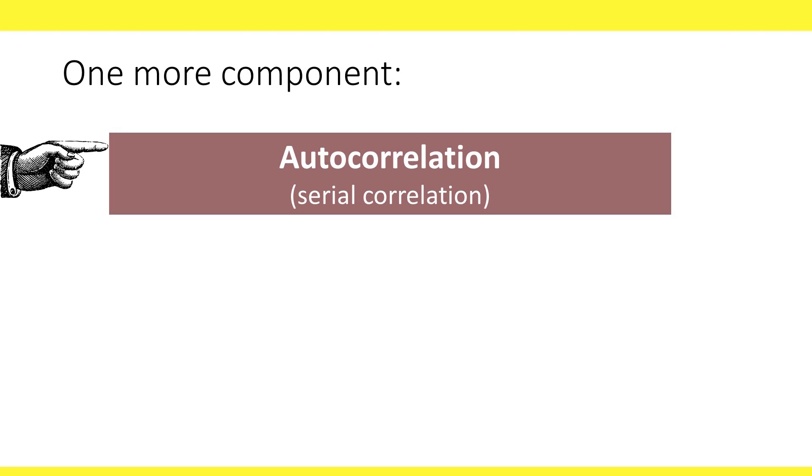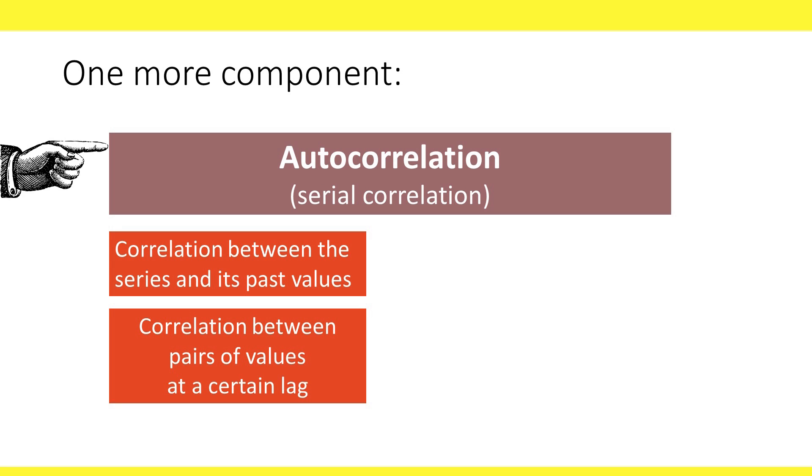This additional pattern is called autocorrelation, or serial correlation. It's the correlation between values in a series and past values. Another way to think of autocorrelation is a correlation between pairs of values at a certain lag. This means that we need to talk about a lag when we're discussing autocorrelation.